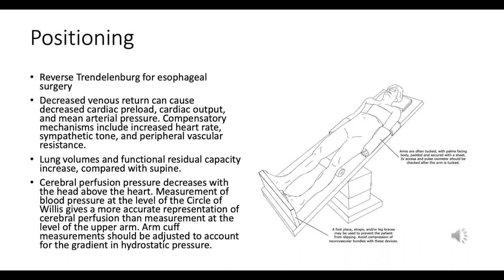Respiratory effects of reverse Trendelenburg include improved lung volumes by reducing pressure on the diaphragm from abdominal organs, and increased functional residual capacity compared to the supine position. Neurological effects include potentially decreased cerebral perfusion pressure due to the head being positioned above the heart, making it important to maintain adequate cerebral blood flow during surgery.